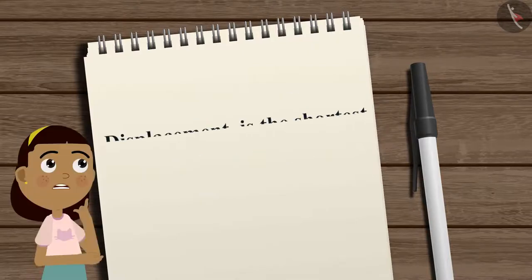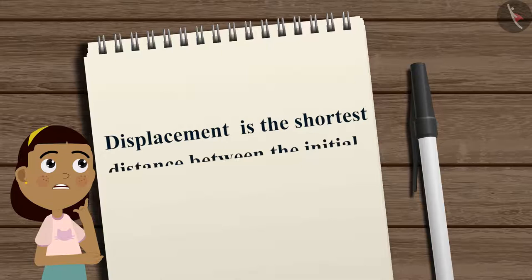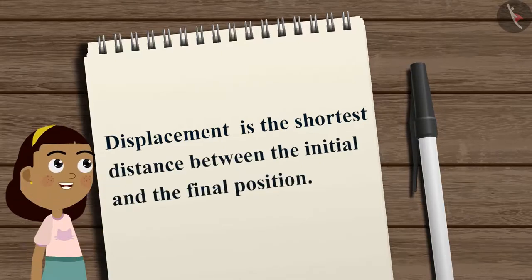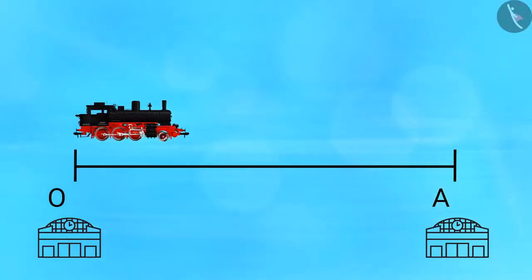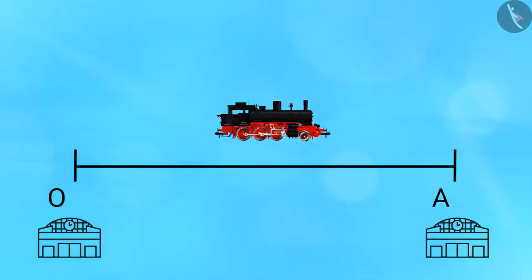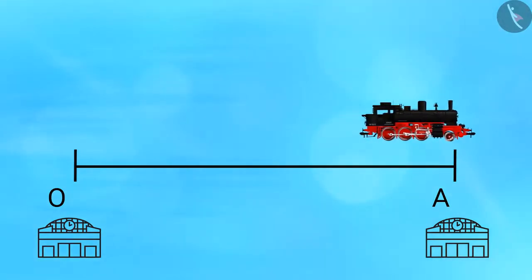For displacement, we must know that it is the shortest distance between the initial and the final position. Since we are considering the train is moving in a straight line, the displacement is equal to the distance. So the displacement is also equal to 150 kilometers.